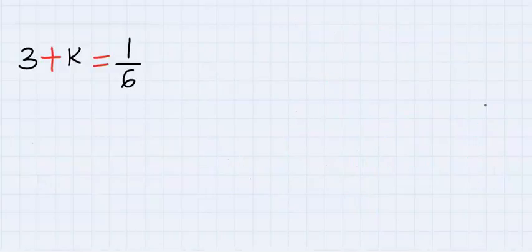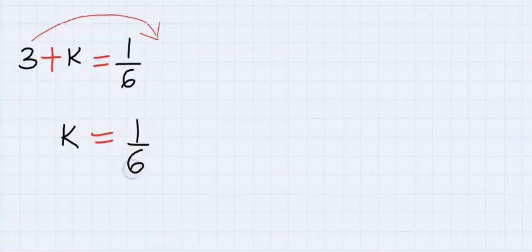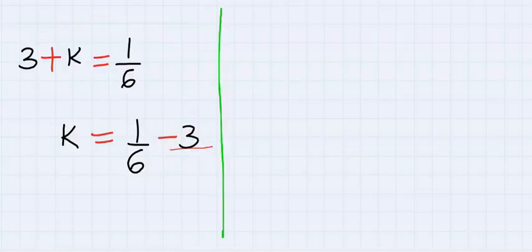Next, k will be here and 3 will move over to the other side, and we are going to have 1 over 6 minus 3. This is also like 3 over 1.